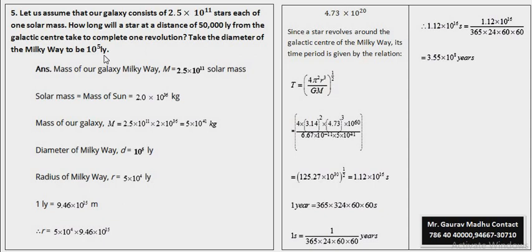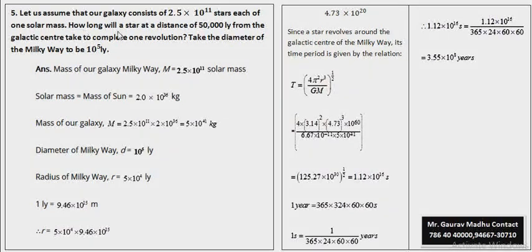इस question में कहा गया है, हमारी galaxy जिसका नाम है milky way galaxy, वो 2.5 x 10 raised to power 11 stars से मिलके बनी हुई है। हर star का mass एक solar mass के equal है, एक solar mass होता है 2 x 10 raised to power 30 kg। इस question में ये पूछा गया है, एक star जिसका distance galactic center से 50,000 light year है, वो कितना समय लेगा अपना एक चक्कर पूरा करने के लिए? और हमें given है diameter of milky way is 10 raised to power 5 light year।